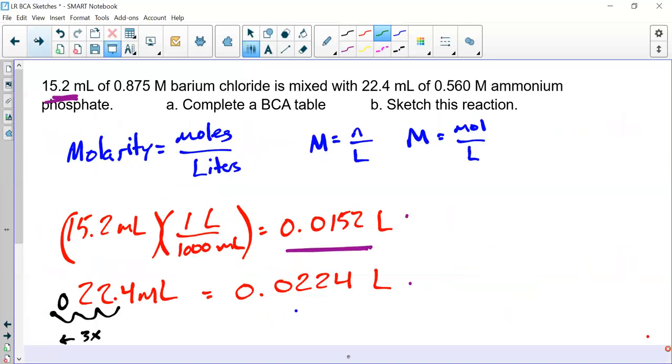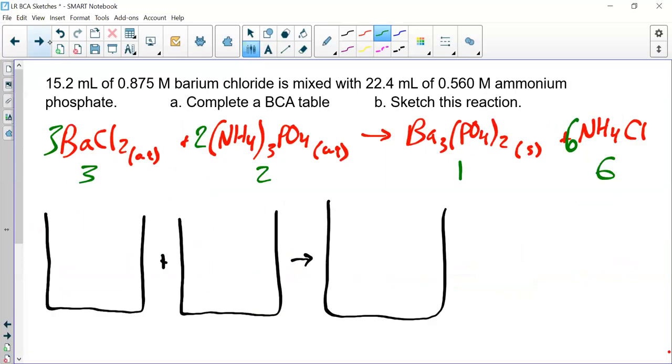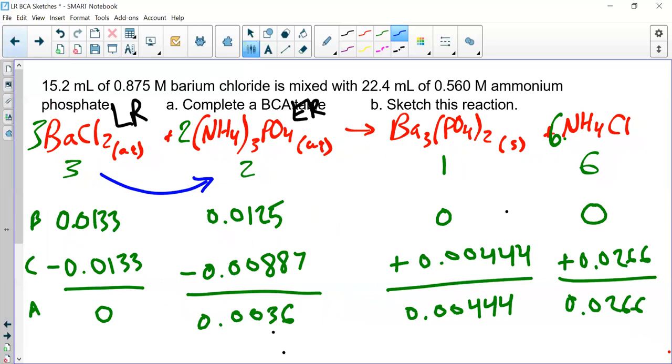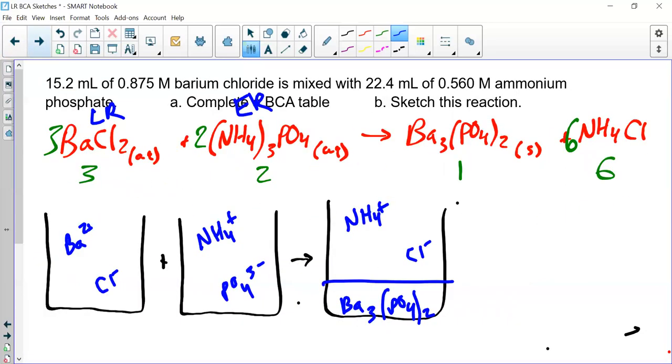Last thing we do is sketch our reaction. I have barium ions Ba²⁺ and chloride ions Cl⁻. I have ammonium and phosphate. I have solid Ba₃(PO₄)₂ at the bottom of my beaker. And I have ammonium chloride, which is NH₄⁺ and Cl⁻. This being a limiting reactant problem, we have to add the excess. This one was my LR, this one was my ER. What's the final ion that's missing here? You need to make sure you have ammonium and phosphate present.